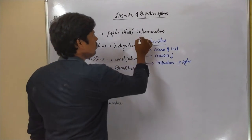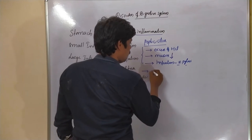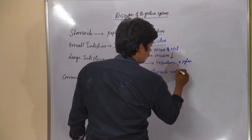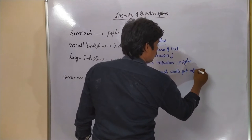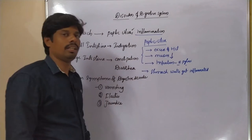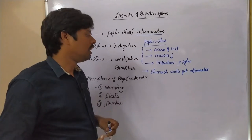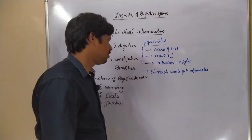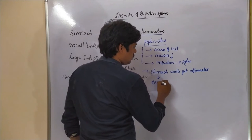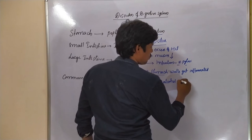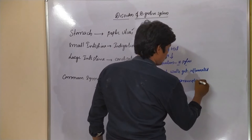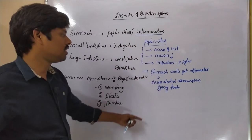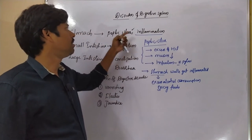Inflammation is the condition where the stomach walls become inflamed — meaning the stomach walls become red and swollen with pain. This is caused by excess alcohol consumption and spicy foods intake; these two are the causes of inflammation in the stomach region.